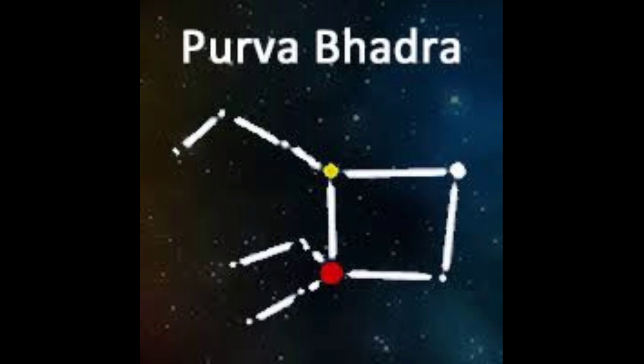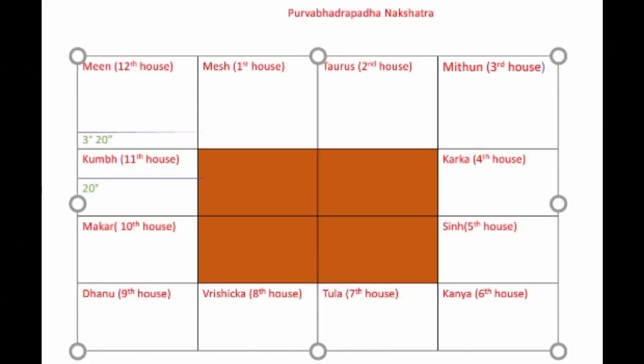It is also called Purvabhadrapada, Purvabhadra, etc. This nakshatra is a part of two zodiac signs: Kumbh or Aquarius and Min. Only the last pada lies in the sign of Min. In the diagram, you can see two purple lines. One purple line starts at 20 degrees within the sign of Kumbh, indicating the start of Purvabhadrapada nakshatra. It ends at the other purple line inside the sign of Min, at 3 degrees 20 minutes. So this is the boundary of Purvabhadrapada nakshatra.